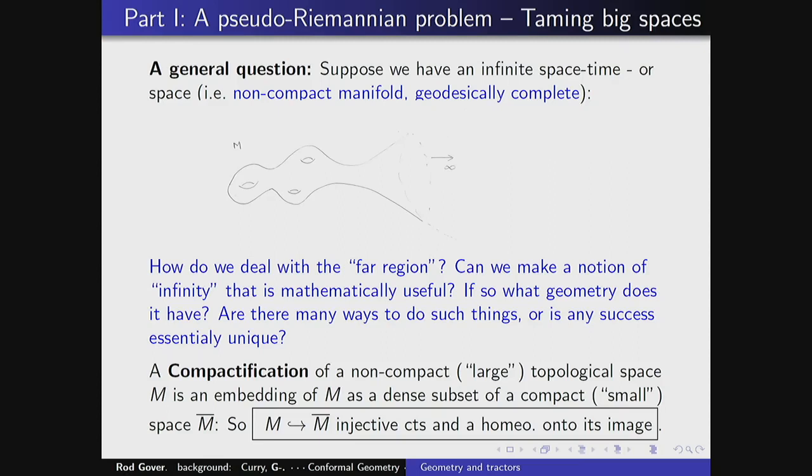In mathematics, you may want to know how to deal with the far region — can you make a good notion of infinity that's mathematically useful? One of the things people have traditionally done is the idea of scattering: you want to sit out at infinity and send waves in, see what they do, and when the waves come back, see what happens. In Riemannian signature they're not really waves — you're solving Laplacians or something — but philosophically that's the idea. In order to do that, you want to know what you mean by sitting out at infinity and how to set that up properly.